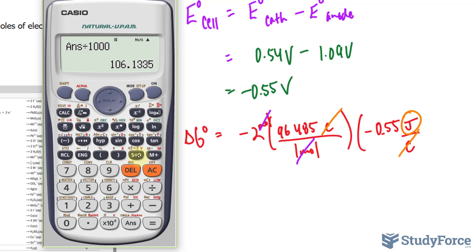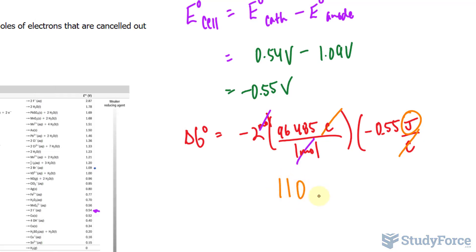So to two significant figures, this is 110 kilojoules. Delta G is positive. And as mentioned before, the reaction has to be non-spontaneous under standard conditions because a positive equates not spontaneous.